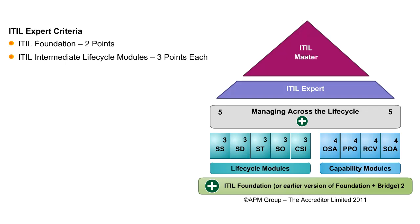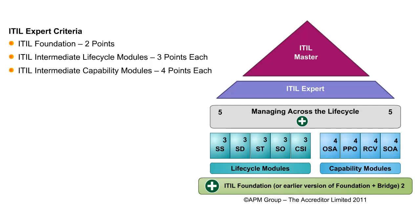The Lifecycle modules have all the standard five Lifecycle phases as exams which provide three credits each. Capability modules are more focused towards implementation content and have four exams which provide four credits each. You can choose any one of the modules from either stream or make a combination based on your experience in the industry. Thus, at this level, the minimum credit requirement is 15.